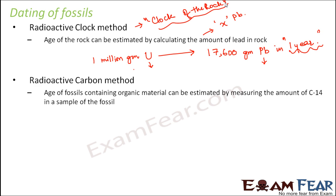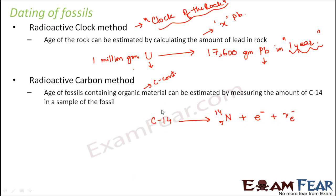The second method is radioactive carbon dating. The age of fossils containing organic material — carbon-containing material — can be estimated by measuring the amount of carbon-14 in a sample of the fossil. Carbon exists in two isotopes: C12 and C14. C14 is unstable and undergoes radioactive decay, getting converted into nitrogen, wherein it releases an electron and an anti-neutrino particle.